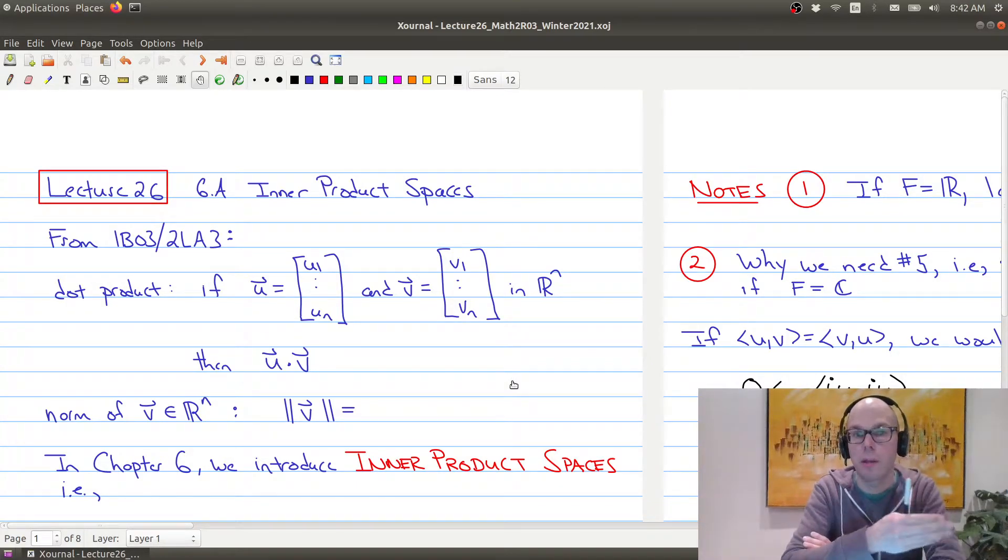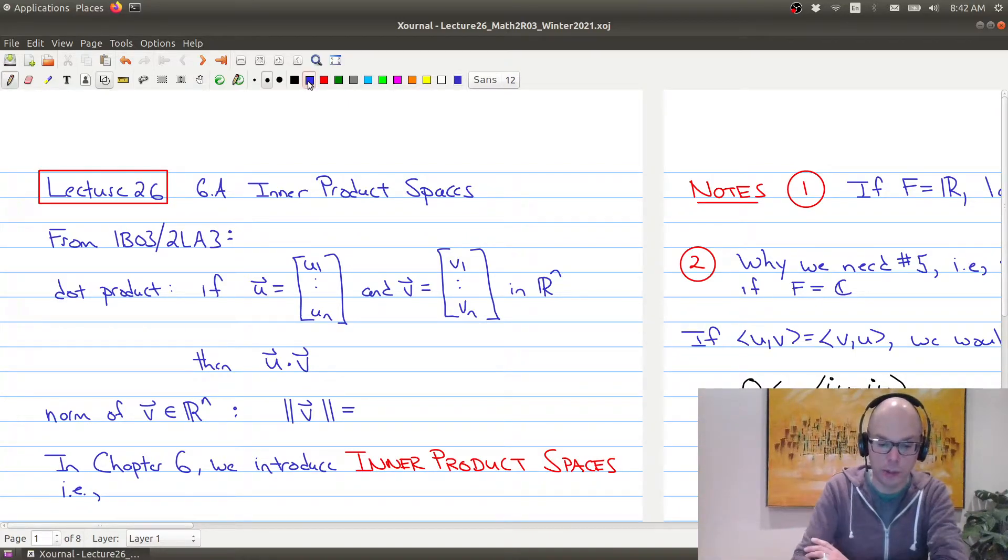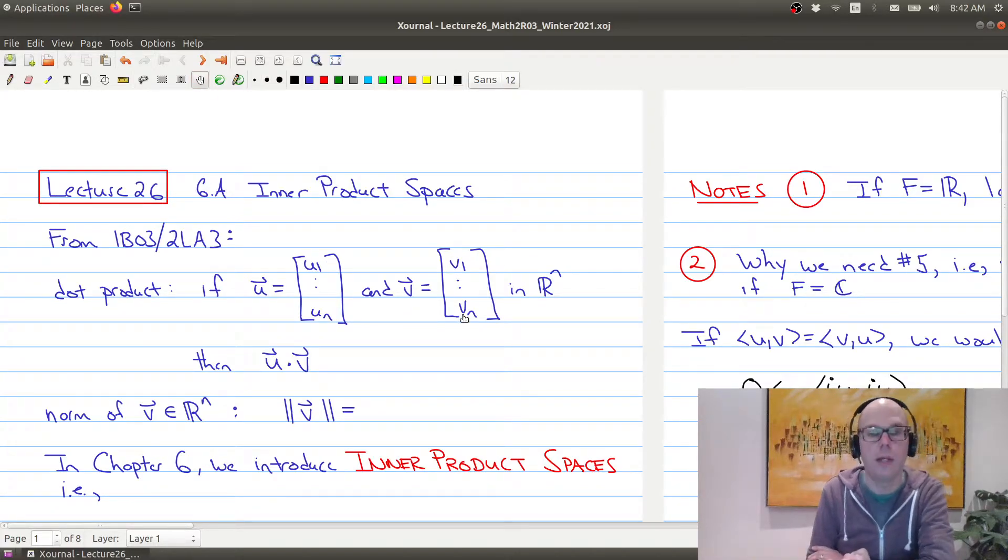When we look at this material in Chapter 6, I want you to think back to some of the material you would have seen in Math 1B03, or 2LA3, if you took it, namely the dot product. So if you remember what the dot product of two vectors was, if you had a vector u1 to un in Rn, and a vector v, v1 to vn in Rn...